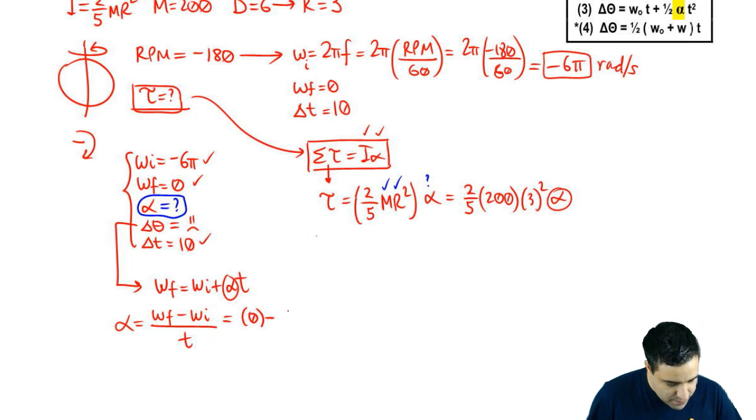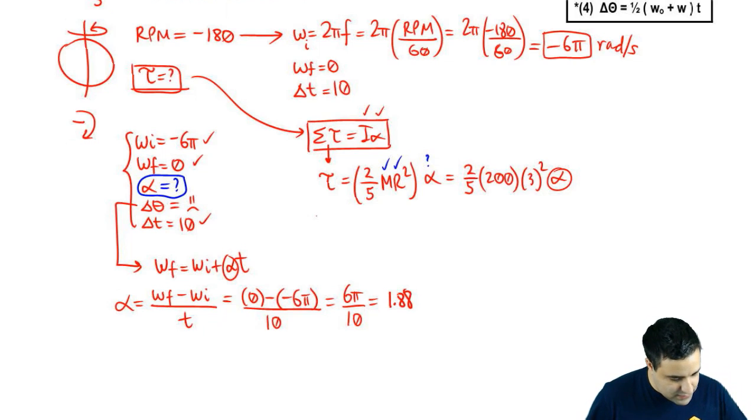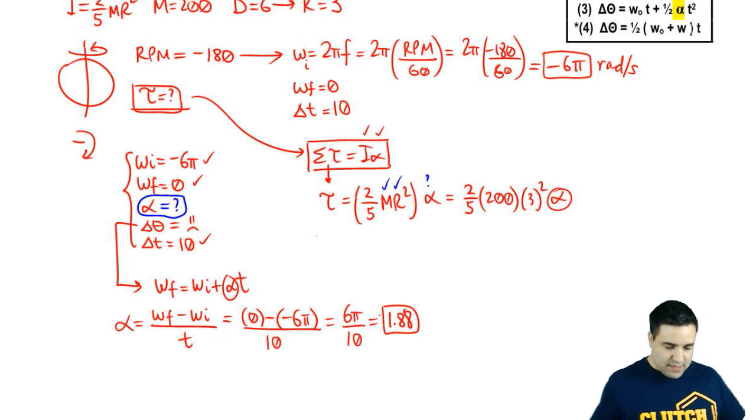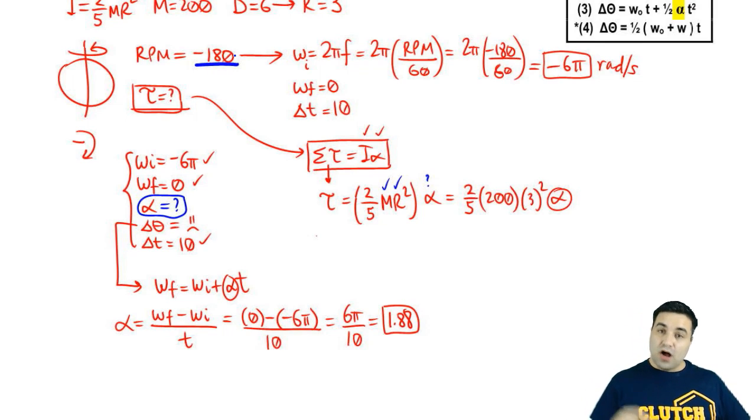This is zero minus negative six pi, and the time is 10 seconds. So these cancel, and I put six pi over 10 positive. Six pi over 10, which is 1.88. I got a positive, which should make sense. Even though I'm slowing down, let's talk about that real quick. My velocity is negative. If I'm slowing down, I'm trying to make my velocity positive. So my acceleration should be positive.